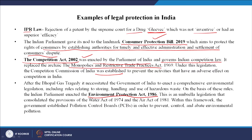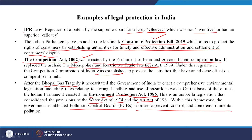The Environmental Protection Act came in 1986 after the Bhopal gas tragedy — the Union Carbide case where many people lost their lives and generations were affected. The government enacted comprehensive environmental legislation covering rules relating to storing, handling and use of hazardous waste. This umbrella legislation consolidated provisions of the Water Prevention and Pollution Act and the Air Prevention and Pollution Protection Act of 1974 and 1981. Central and State Pollution Control Boards were established.